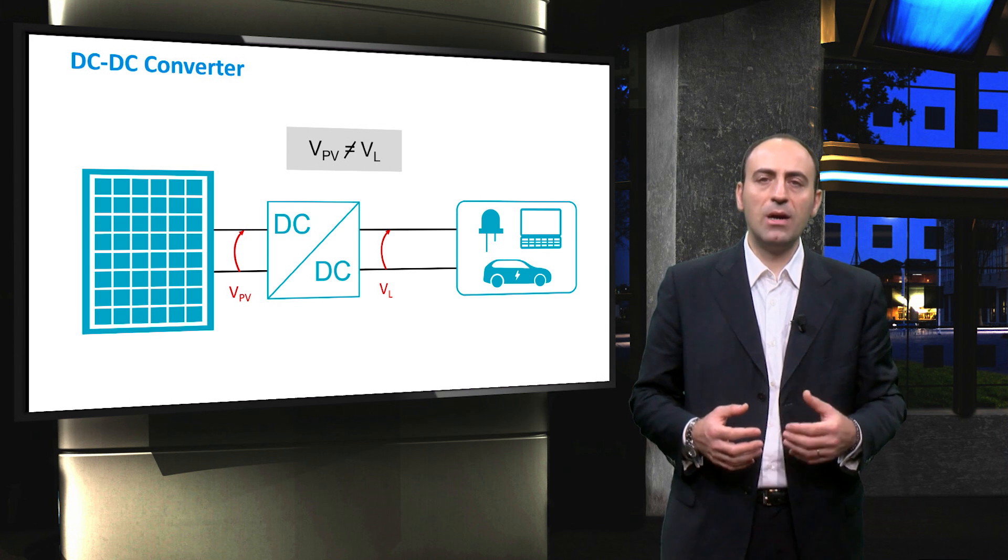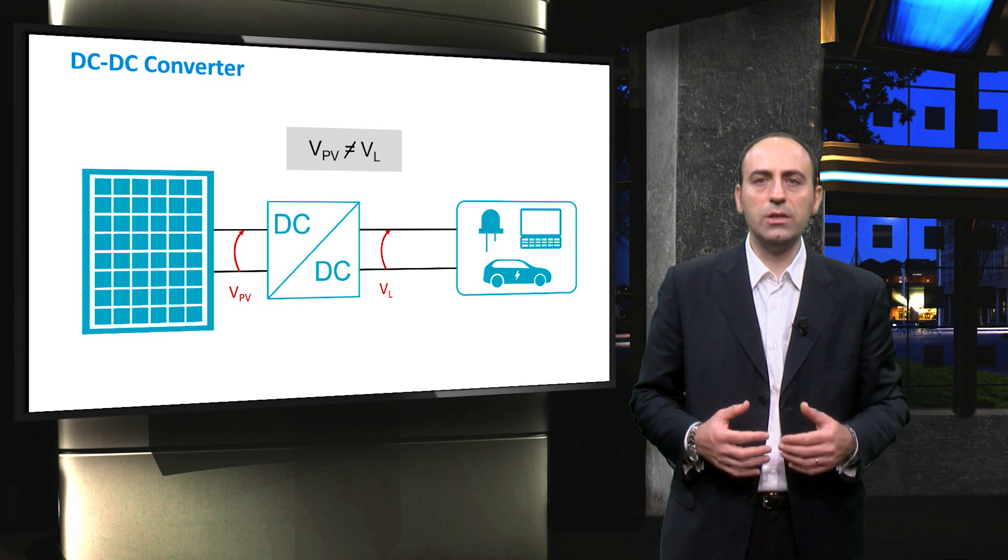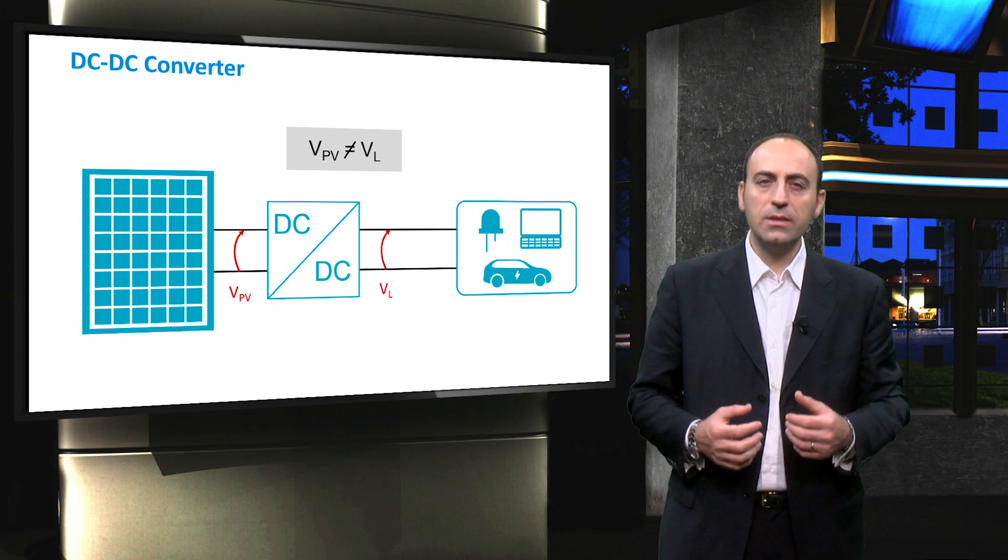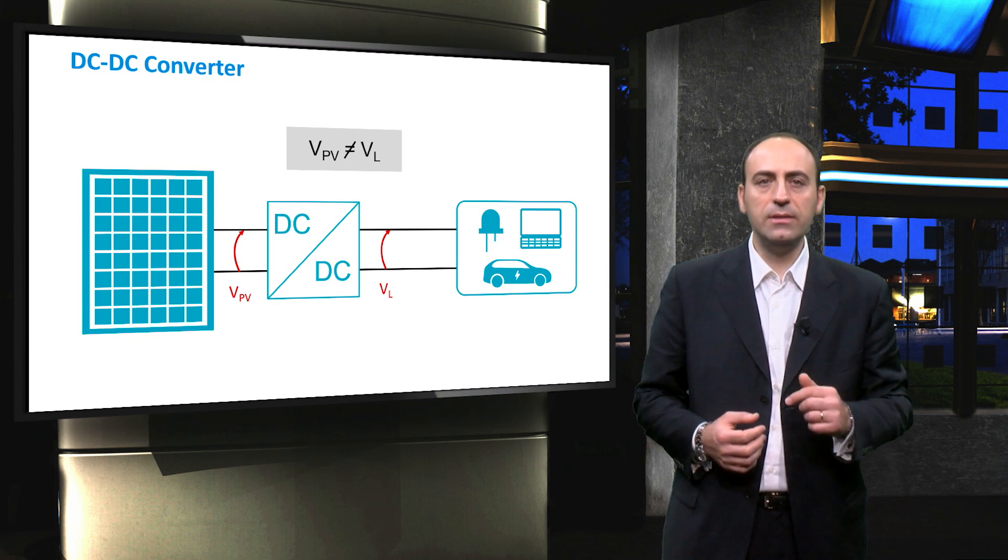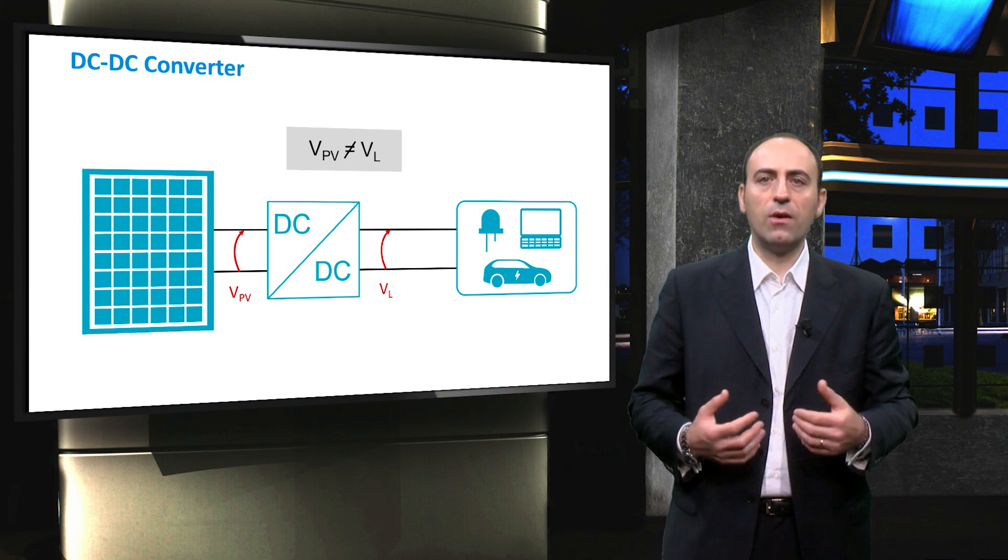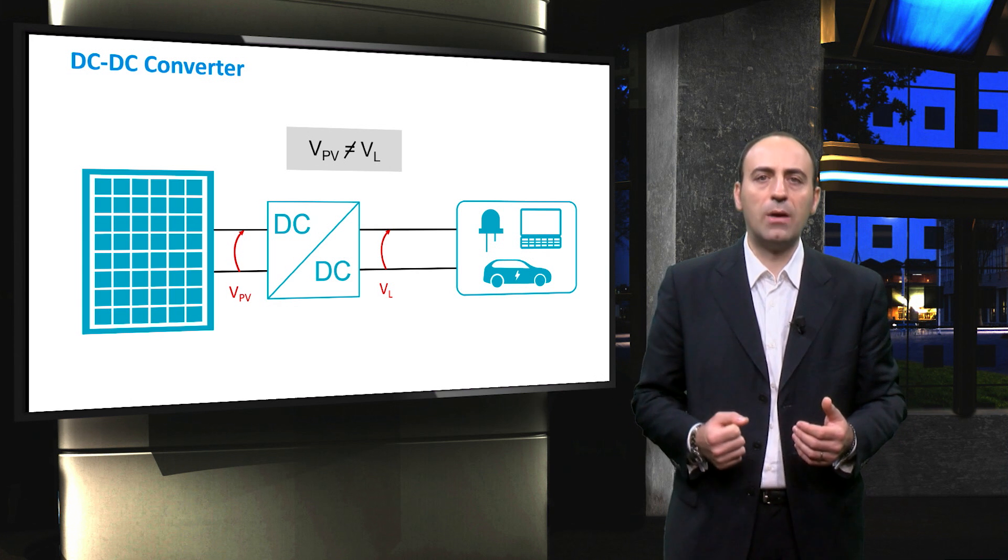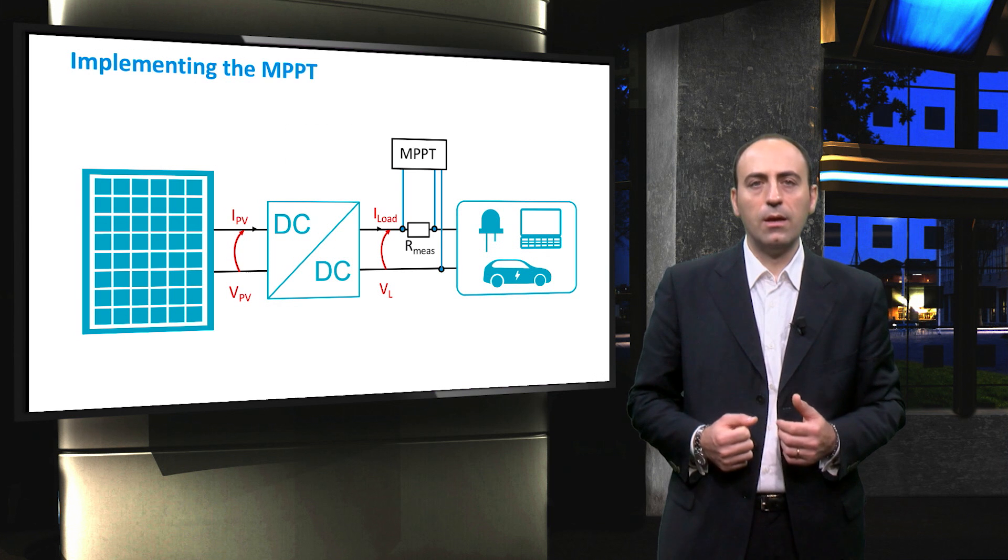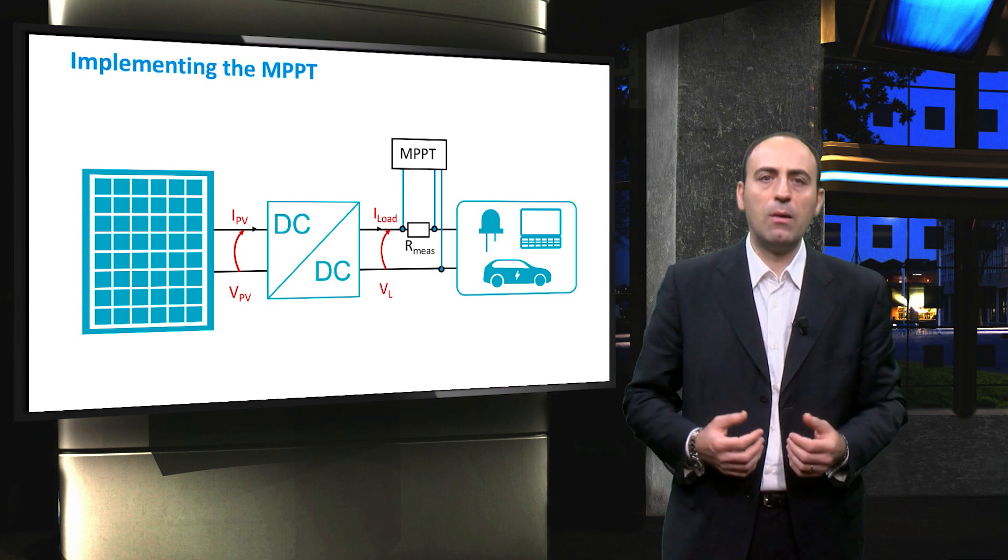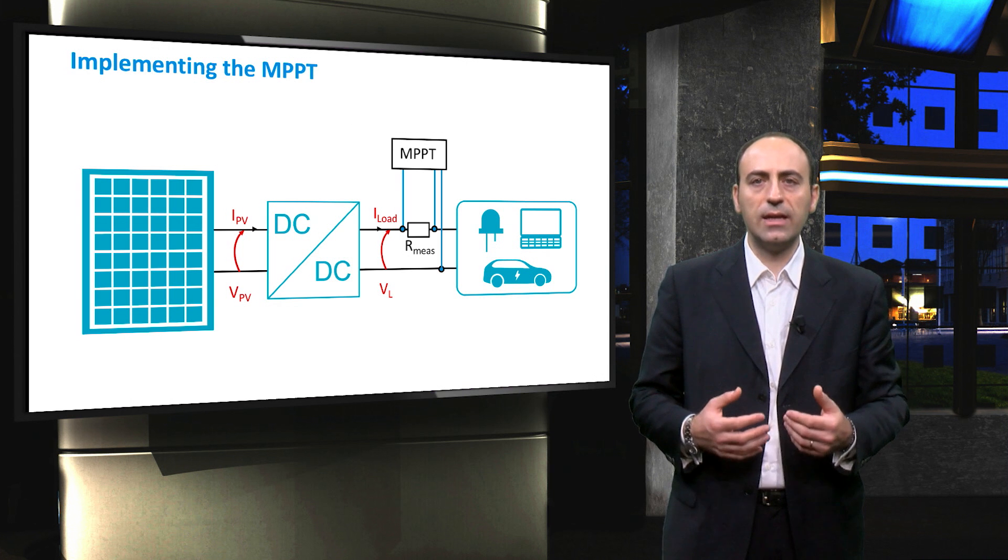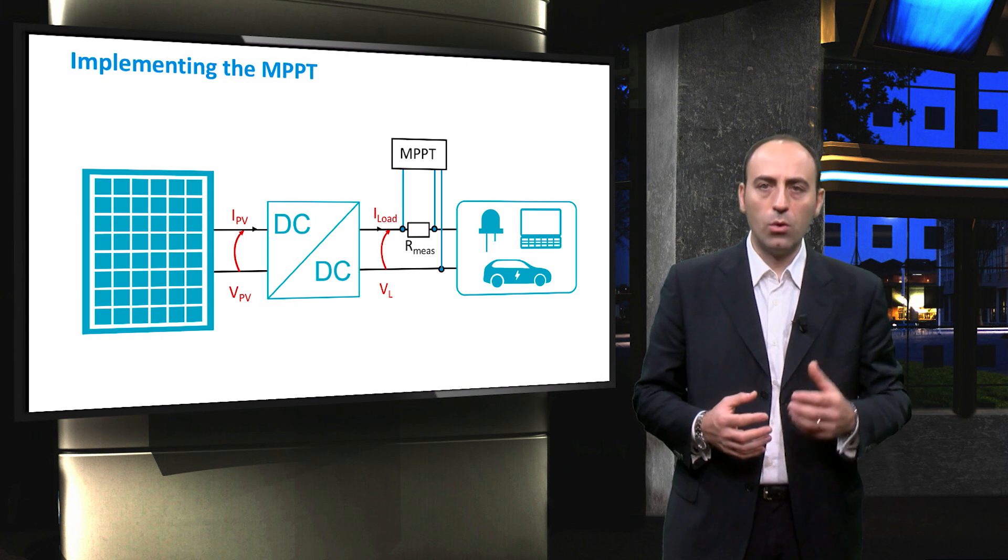We have already seen that the maximum power point tracker controls the operating point of the modules, but cannot set it. This task is then performed by the DC-DC converter, which varies the PV voltage in order to draw always the maximum power available. Adding the maximum power point tracker is nothing else than adding an additional circuit that can be also embedded on the board of the converter.